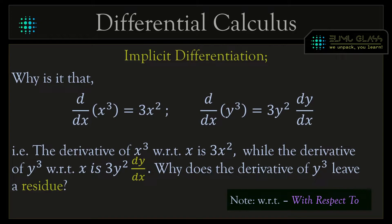By the way, 'wrt' implies 'with respect to'. So the derivative of x cubed with respect to x is 3x squared, while the derivative of y cubed with respect to x is 3y squared dy by dx.